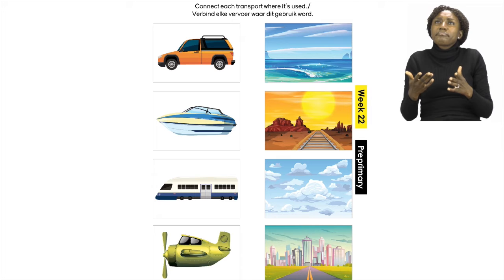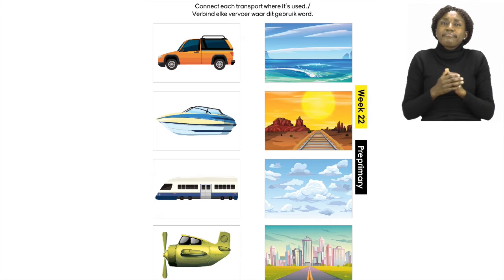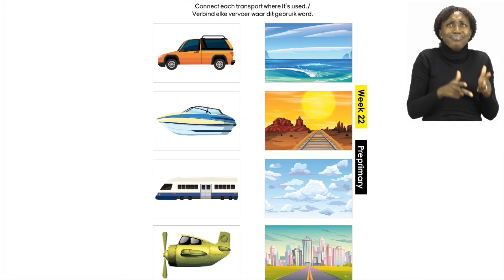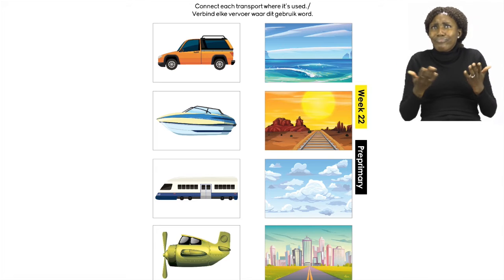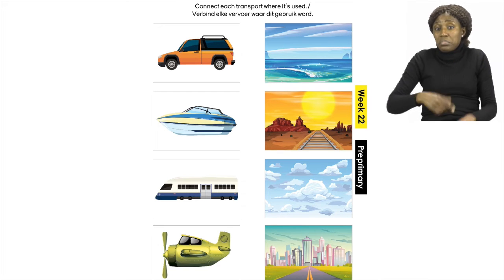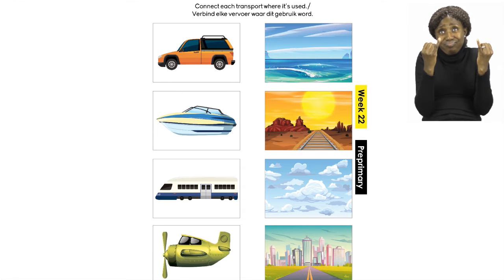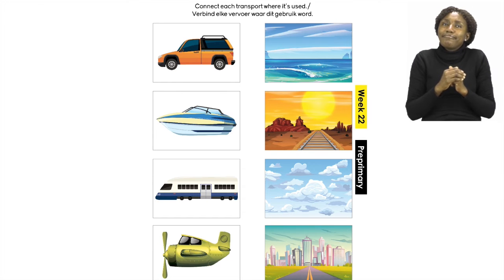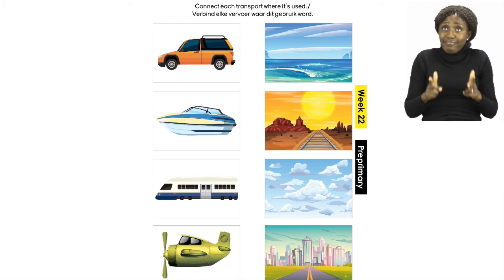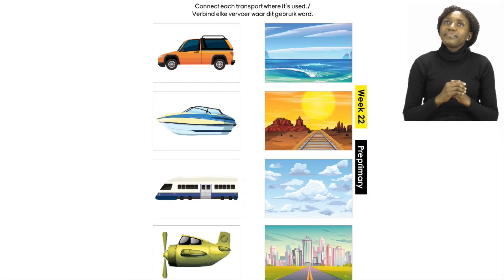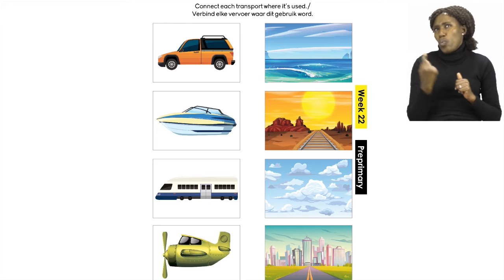Now look at the places. Where do you think a train will be used? Will the train be on the ocean, on the railway, in the clouds, or on the road? If you said a train is used on the railway, then you are correct — a train can only ride on the railway.